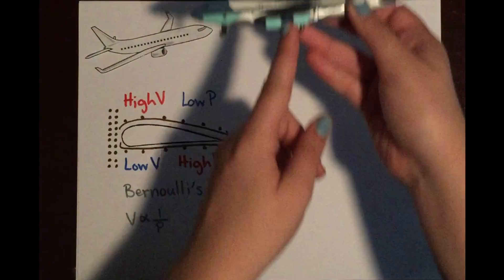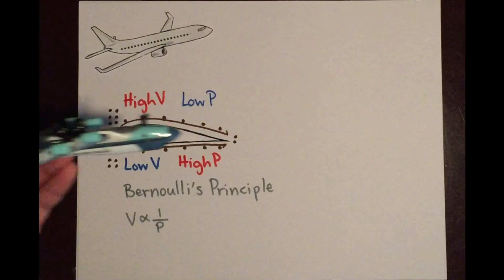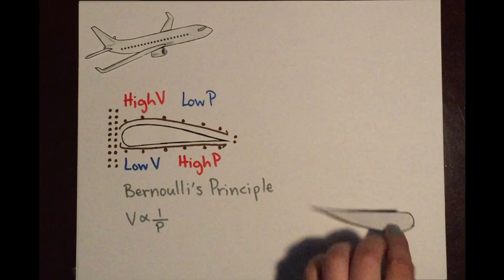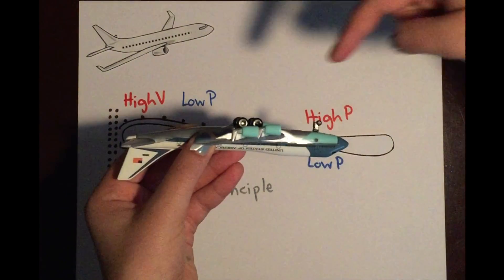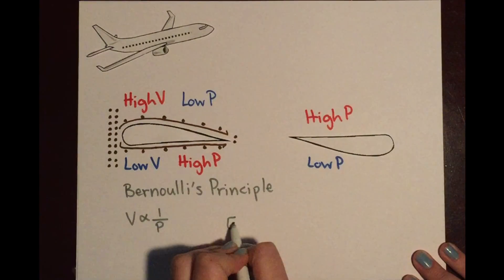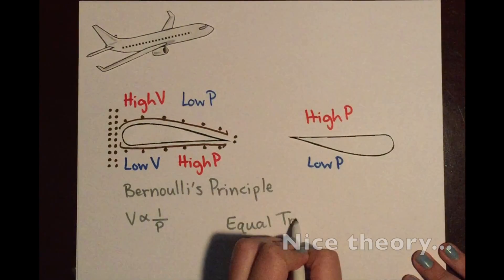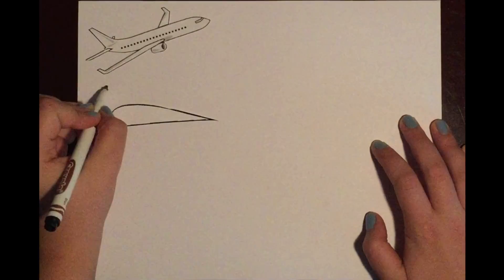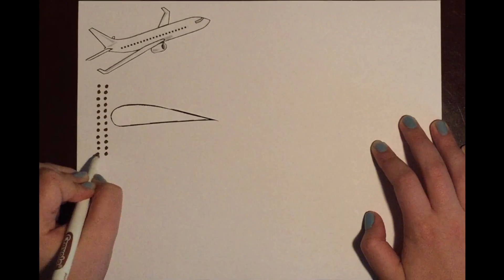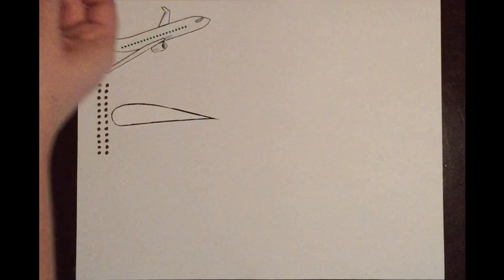This pressure pushes up on the wing, causing lift. But wait, then how can an airplane fly upside down? That means that there would be a low pressure on the bottom and a high pressure on the top, pushing the airplane down. This theory is called the Equal Transit Time Theory because it assumes that all of the air particles take the same amount of time to cross over the wing.